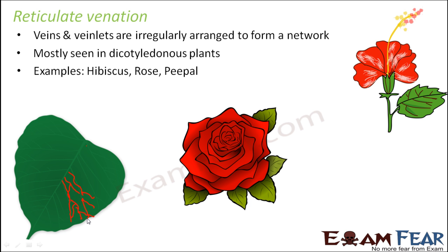That is known as reticulate venation. You would likely have these kinds of plants in your house — for example hibiscus, rose, or peepal. You can actually observe the leaves of such plants to understand what reticulate venation looks like.